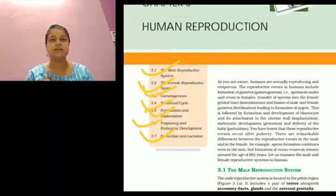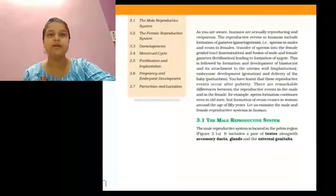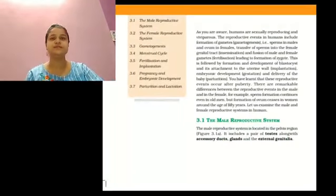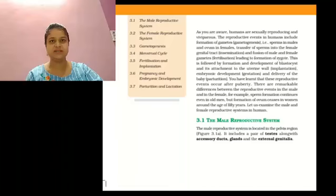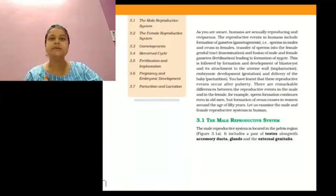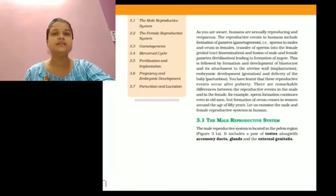Now we are discussing the male reproductive system. If we talk about the male reproductive system, generally the male reproductive system is divided into four main parts: the first one is testes, the second one is accessory duct, the third one is glands, and the fourth one is external genitalia.